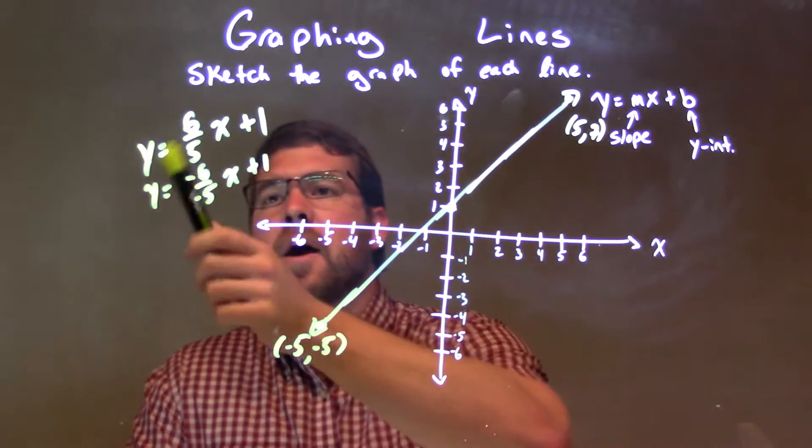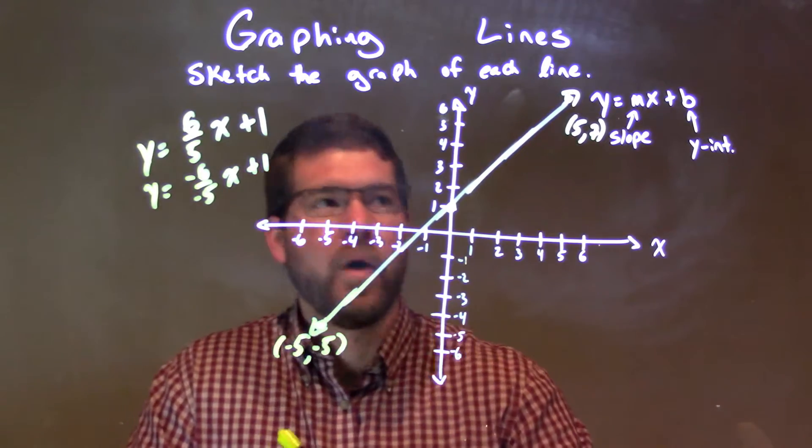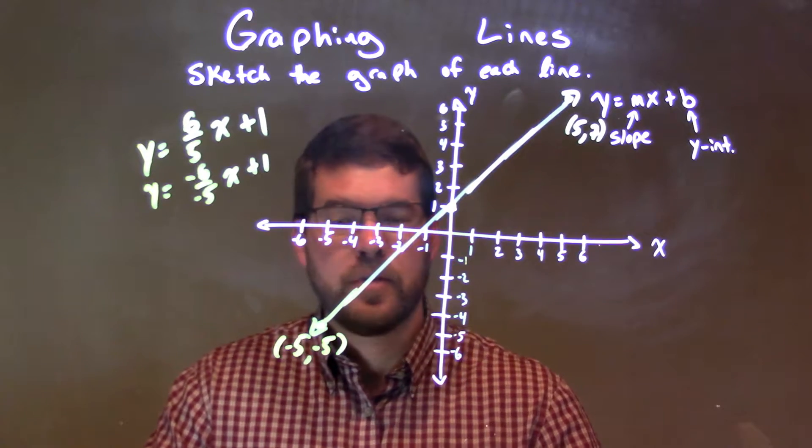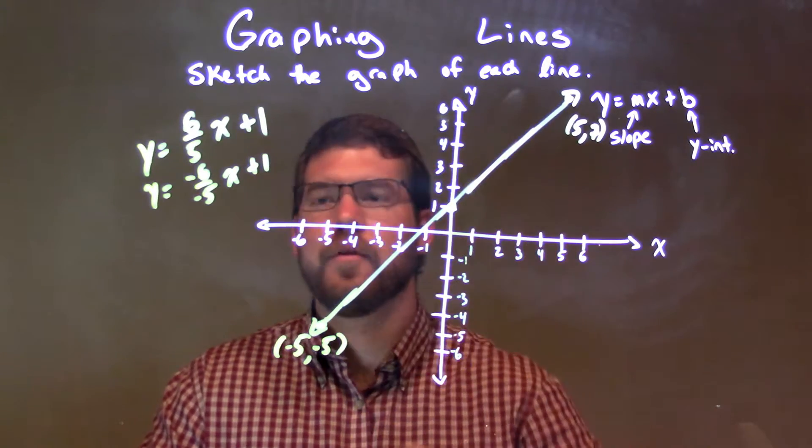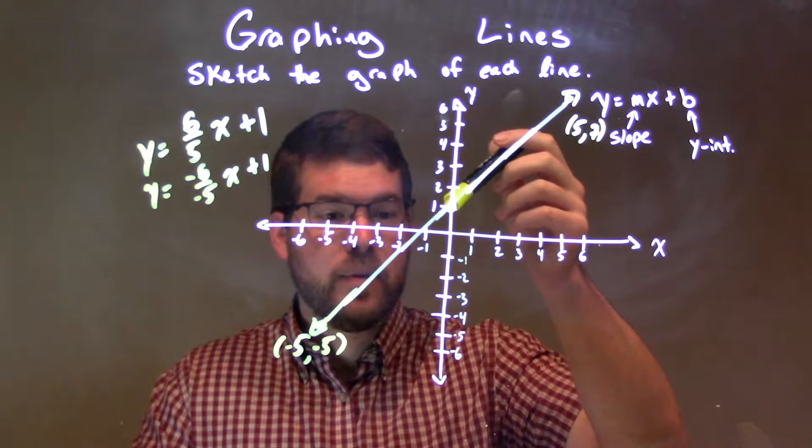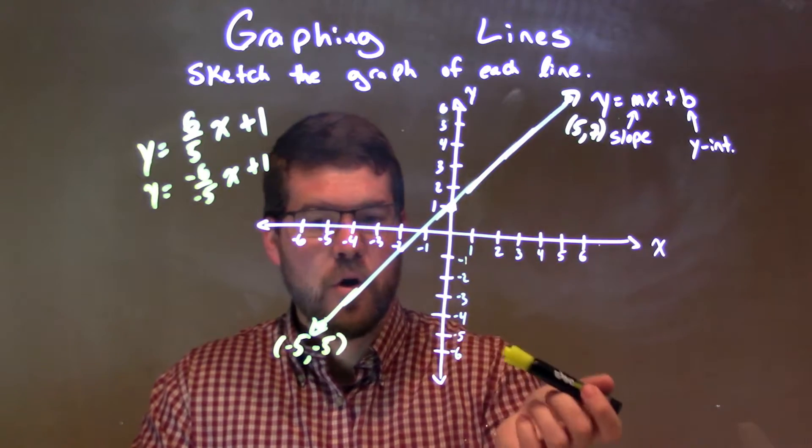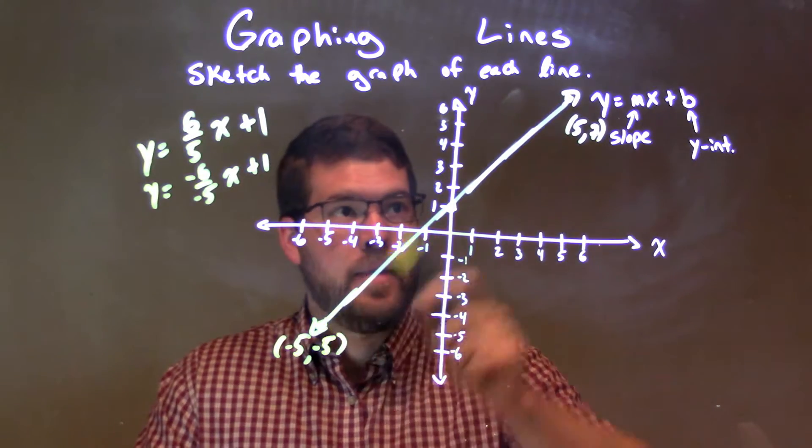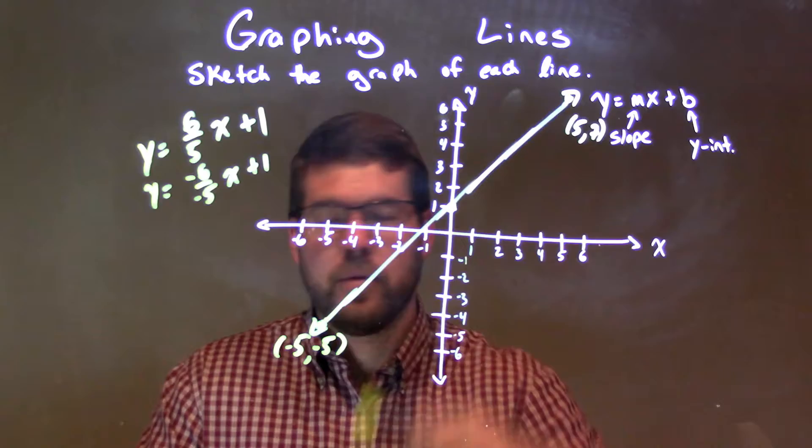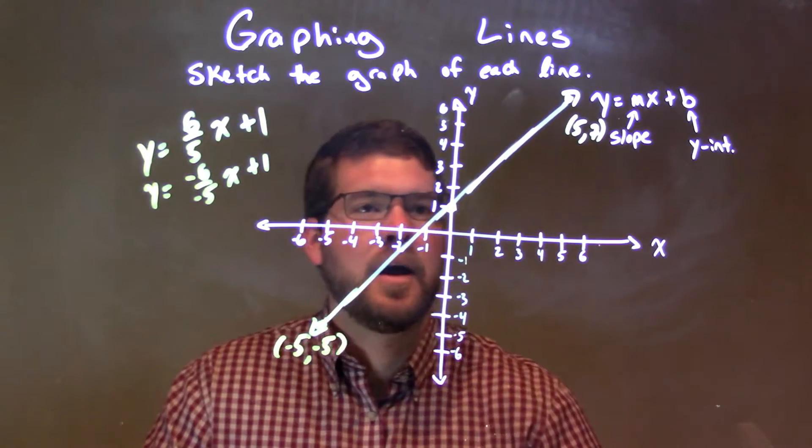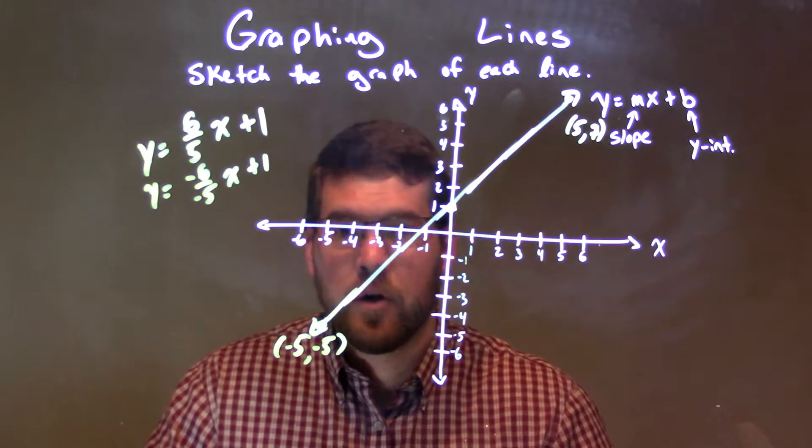So let's do a quick recap. We're given y equals 6 fifths x plus 1. 1 is our y-intercept, so I put it down right there, and then our slope was 6 fifths, so we went up 6 units over 5. That's the same thing as negative 6 over negative 5, so I also went down from that original starting point, down 6 units, over to the left 5 units. And that gives us another point on that line, and so now we connect these three points. You know, we only need two for a line, we connect these three to make a line, and now we have our final answer.